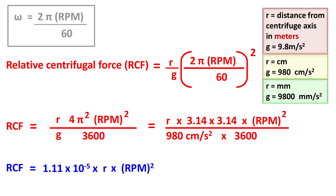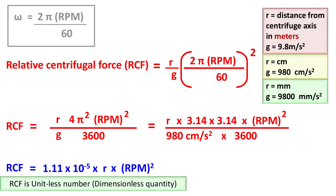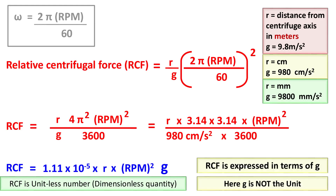As discussed earlier, the value of RCF is a dimensionless number. However, it is expressed in terms of g. Your g is not the unit — it simply indicates how powerful the centrifugal force is when compared to gravitational force on Earth.